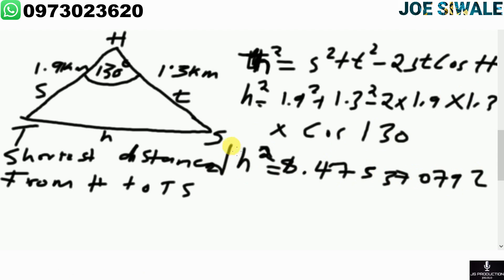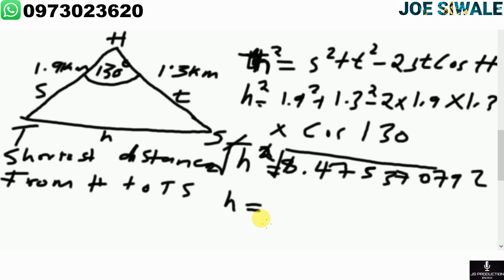To calculate the value of small letter h, the squared and square root cancel out, so we take the square root of 8.475370792, which gives 2.92. So the length TS is 2.92 kilometers, rounded to two decimal places. The next thing is to calculate the area.